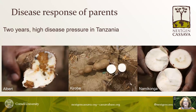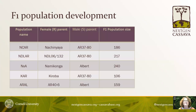Here are some of the disease symptoms of the parents after two years of high disease pressure in Tanzania. You can see Albert on the left showing severe root necrosis, whereas Kiroba and Namikonga are barely showing symptoms at all.